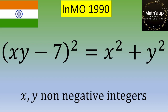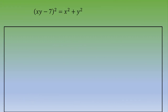Hello and welcome. In this video, an exercise was given during the Olympiad of Mathematics in India in 1990. The exercise is: x and y are non-negative integers, and you want to find x and y verifying this equation — xy minus 7 squared equals x squared plus y squared. If you want to give it a try, please pause the video. Otherwise, let's see the solution.